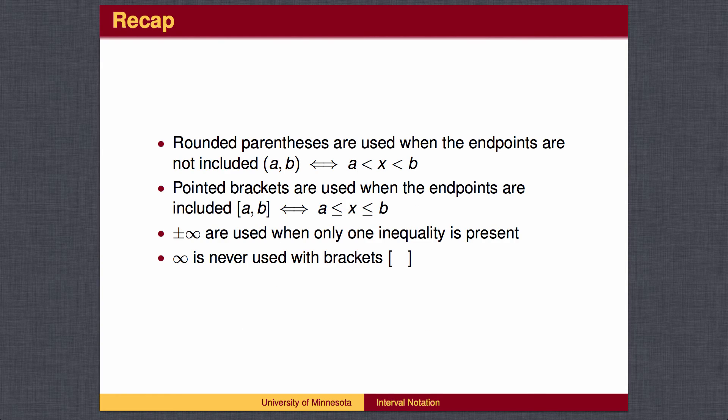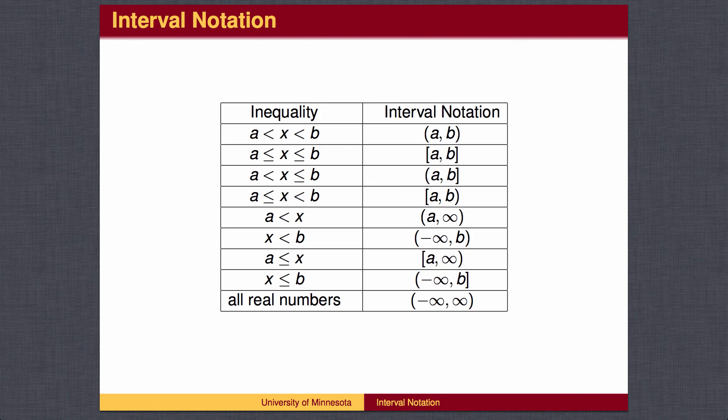To recap, rounded parentheses do not include the endpoints. Pointed brackets do. For a one-sided inequality, use infinity on the other side, always with parentheses, never brackets. Here are the general forms.